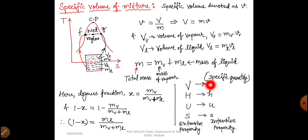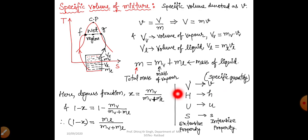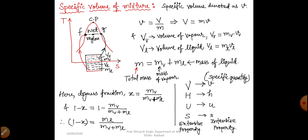Intensive properties are those whose value is obtained by dividing by mass. Any extensive property can be converted into an intensive property by dividing by mass. The extensive properties include volume, enthalpy, internal energy, and entropy; the corresponding intensive properties are specific volume, specific enthalpy, specific internal energy, and specific entropy.